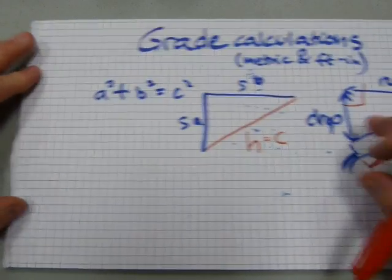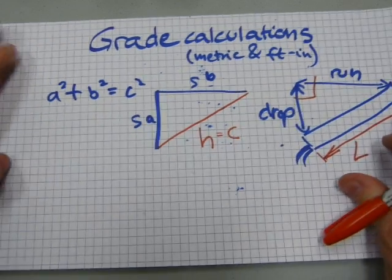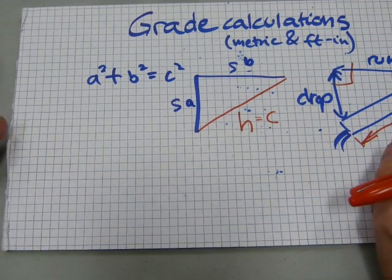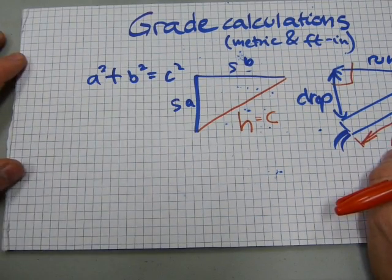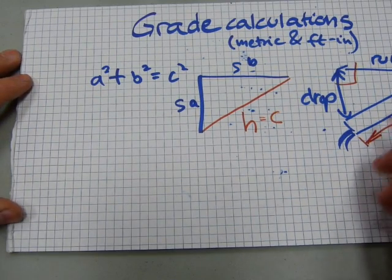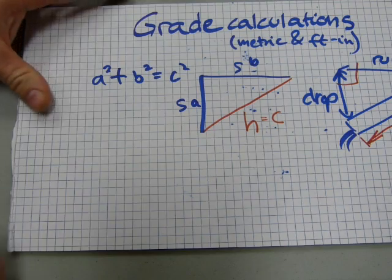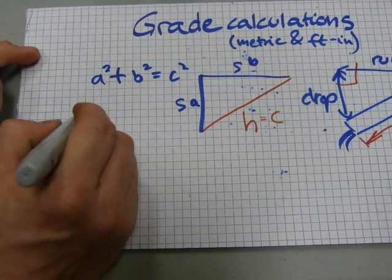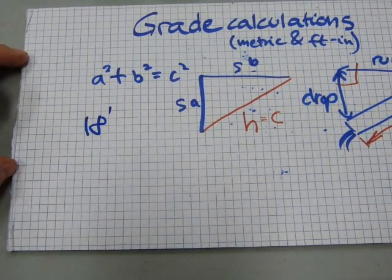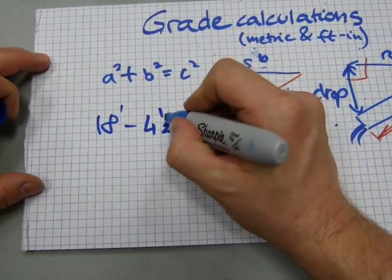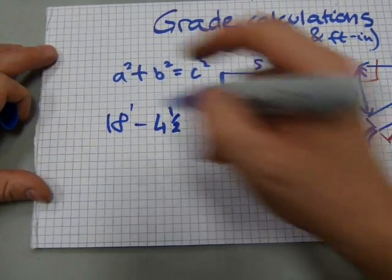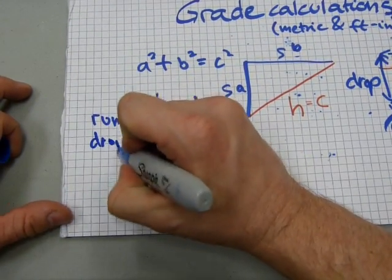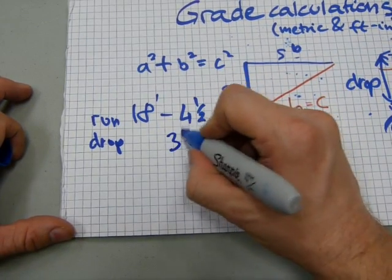So to calculate the length of a pipe you need a figure for drop and a figure for run. I'm going to do one a² + b² = c² calculation on this one. A realistic one that pipe fitters work with. So let's say we have a horizontal run of, I don't know, how about 18 feet 4 and a half inches. That's a delightful number. That's for run. And an 18 foot long pipe drops, I don't know, how about 3 and a half inches.